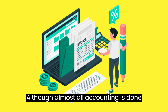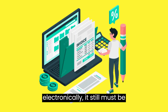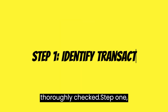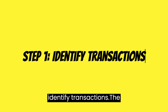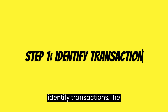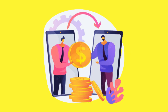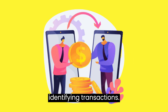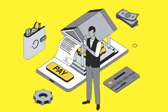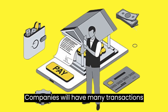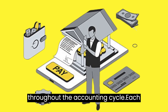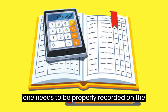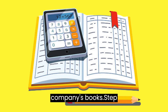Although almost all accounting is done electronically, it still must be thoroughly checked. Step 1: Identify transactions. The first step in the accounting cycle is identifying transactions. Companies will have many transactions throughout the accounting cycle, and each one needs to be properly recorded on the company's books.